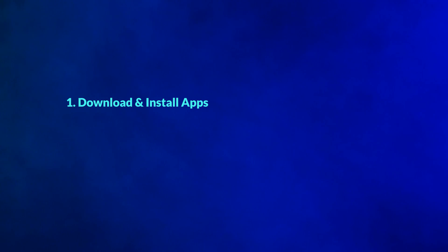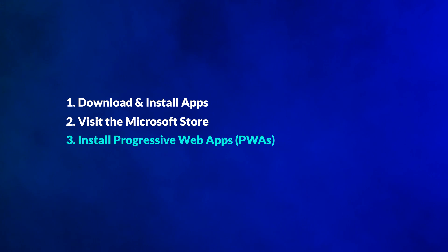Now that Windows 11 is arriving on a PC near you, you might be wondering how to get the apps that you need. There are currently three ways to get apps, with a fourth to be added soon. Today, you can download and install apps, visit the Microsoft Store, or install progressive web apps or PWAs from websites. We'll show you how to do all of these today.